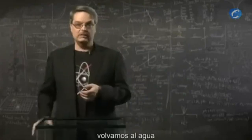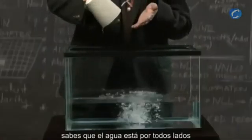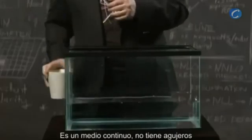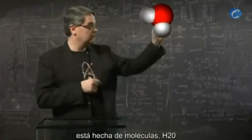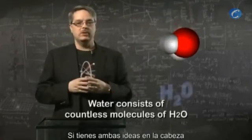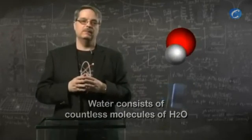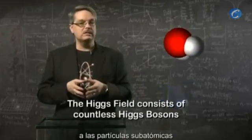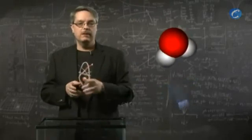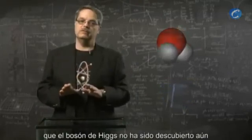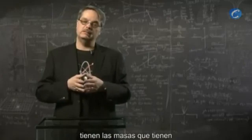To understand how that works, we should again return to water. Everyone knows what water is. If you're immersed in it, you know that water is everywhere — it's a continuous medium, and there are no holes in it. We also know that water is made of molecules, specifically H2O. If you hold these two ideas in your head, with the realization that water consists of countless individual molecules, you can now begin to appreciate the Higgs boson. The Higgs field that gives subatomic particles their mass is made of countless individual Higgs bosons, just like water is made of individual molecules. You should keep in mind that the Higgs boson hasn't been discovered yet, and what I'm describing is simply the most popular idea as to why subatomic particles have the masses that they do.